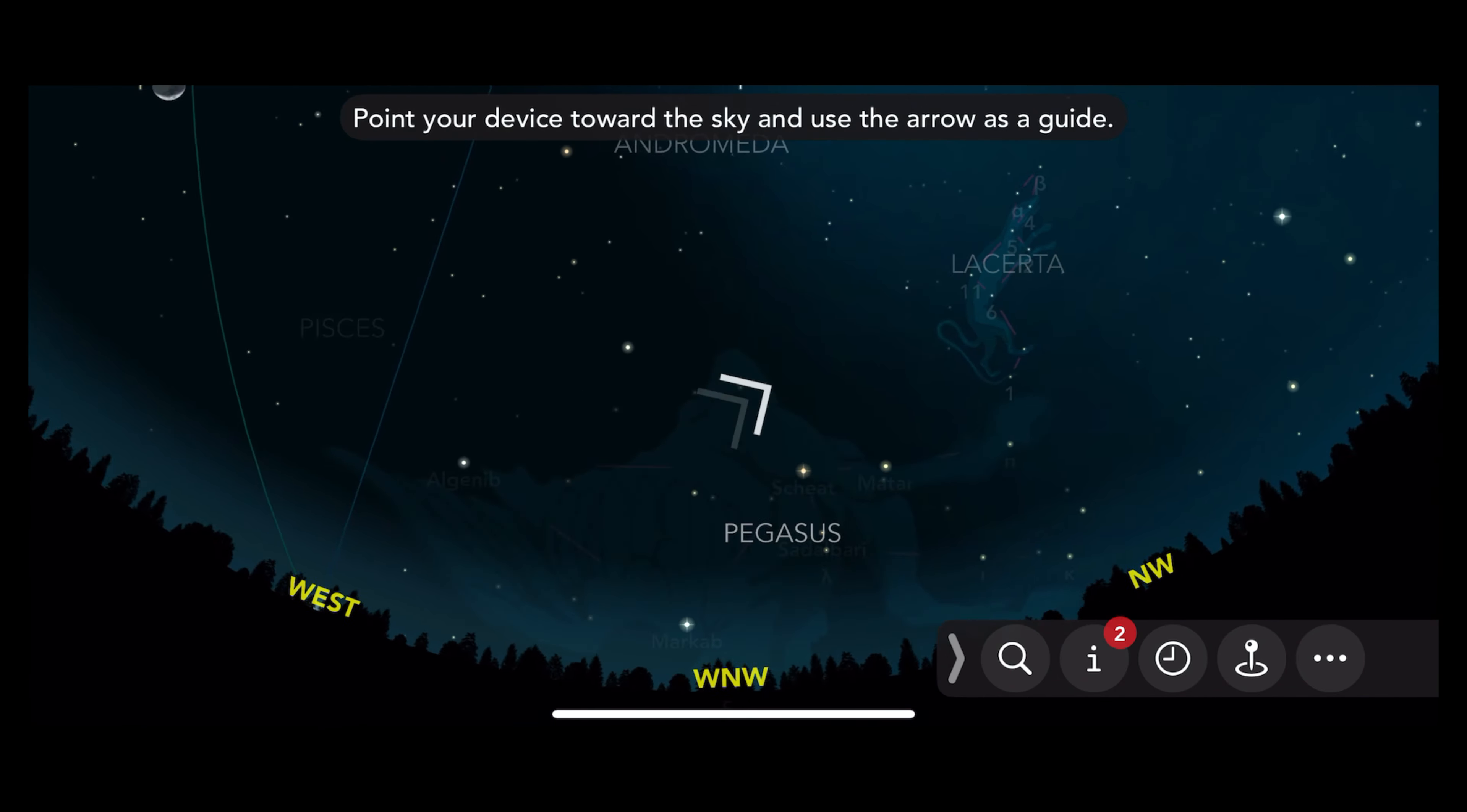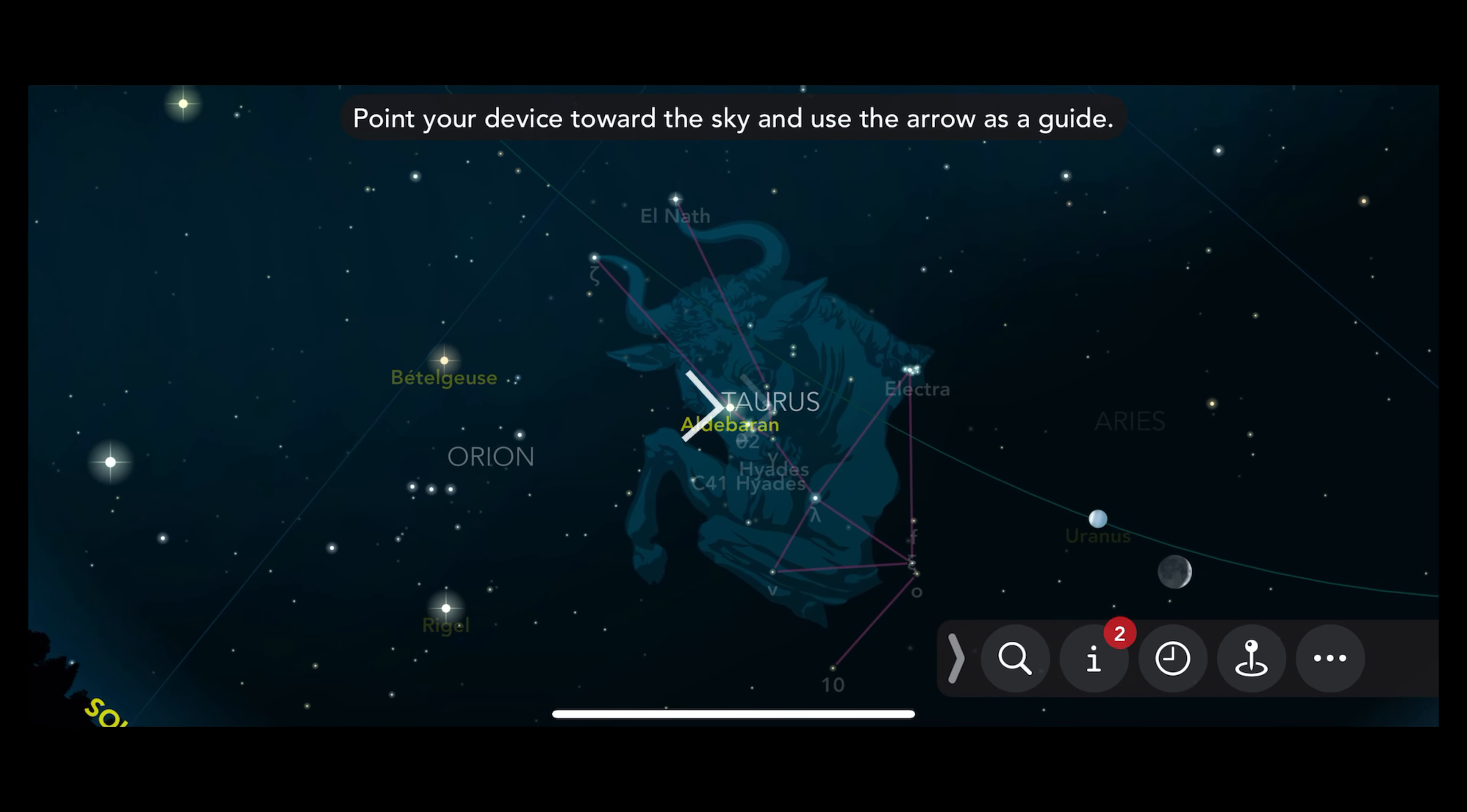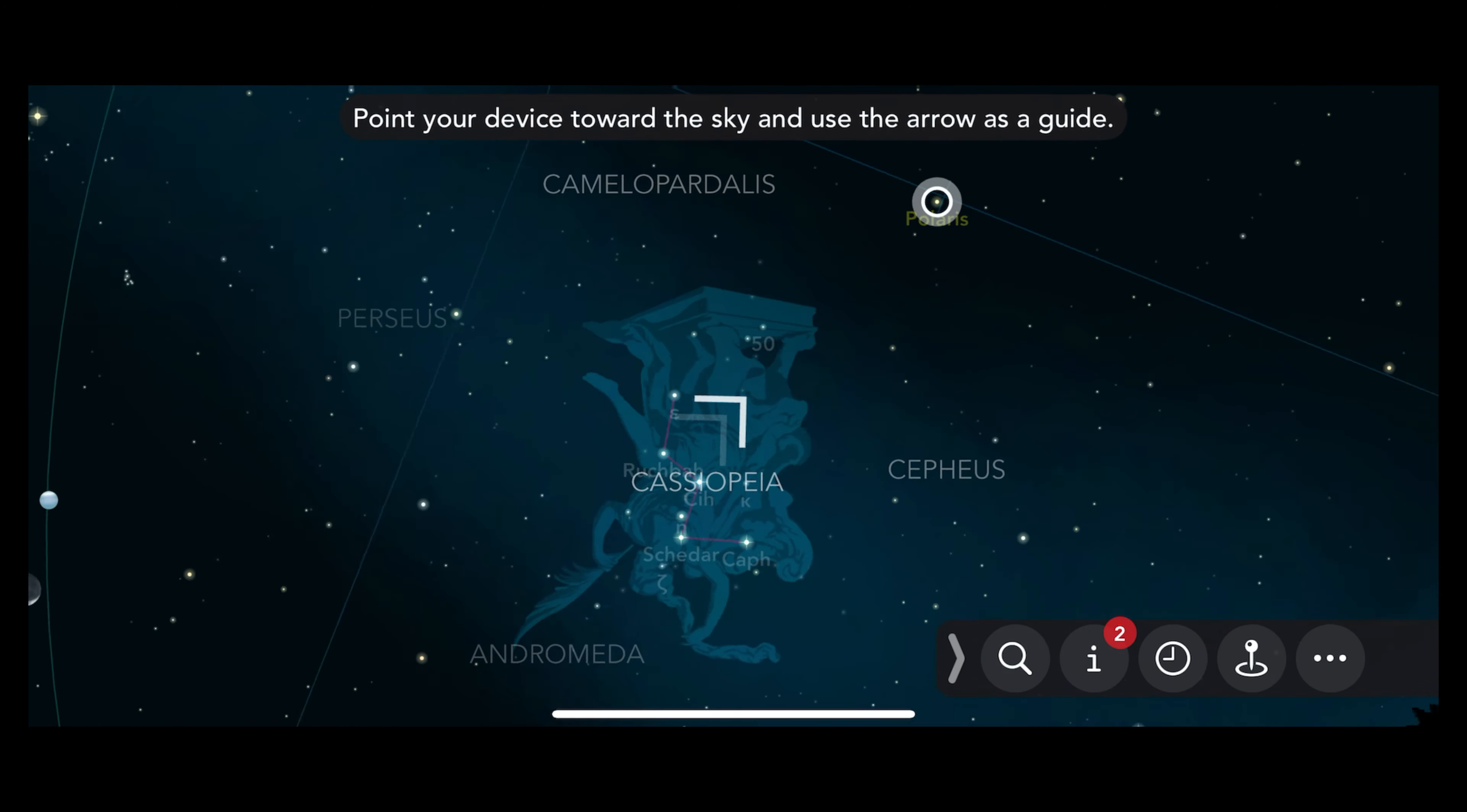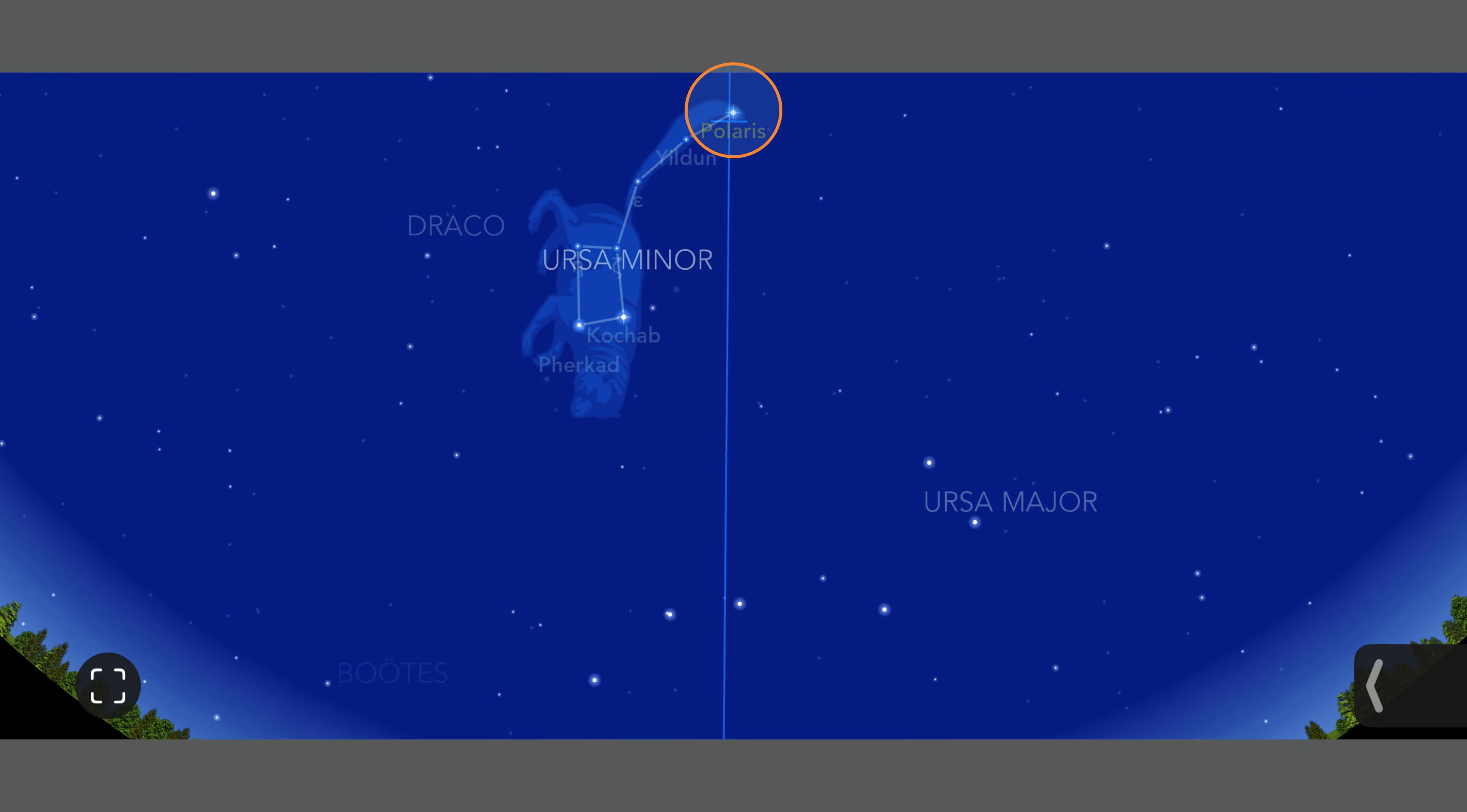It will cost you around three dollars to unlock it to get navigational assist. This means you'll get an arrow pointing in the direction you need to move your phone to find the entered object. But let me show you how to find Polaris without an app.